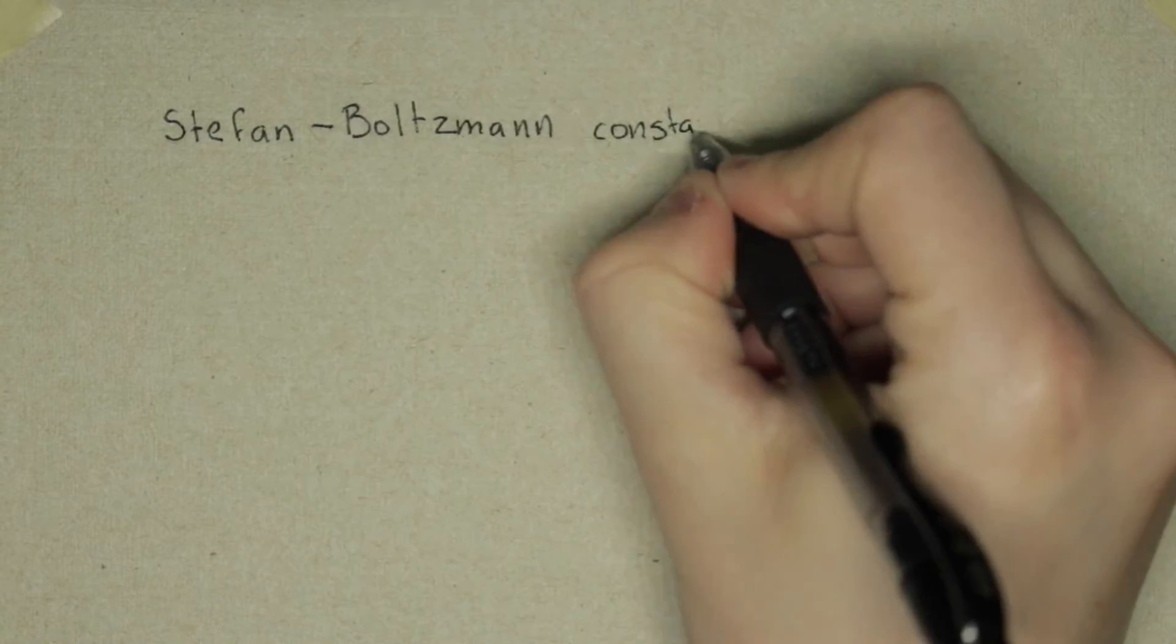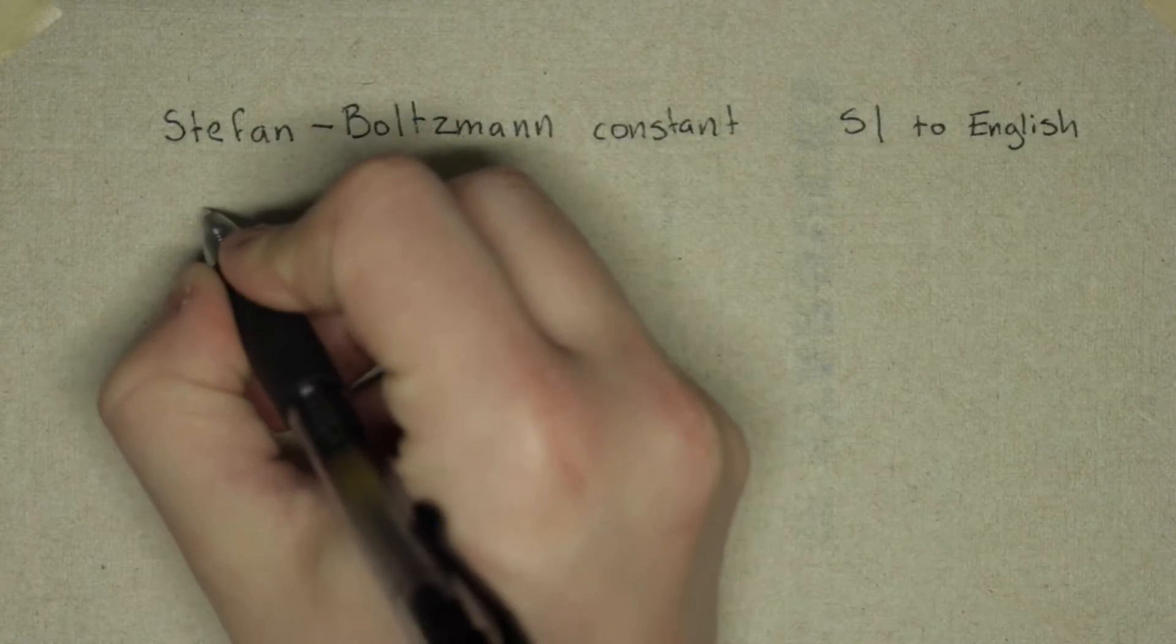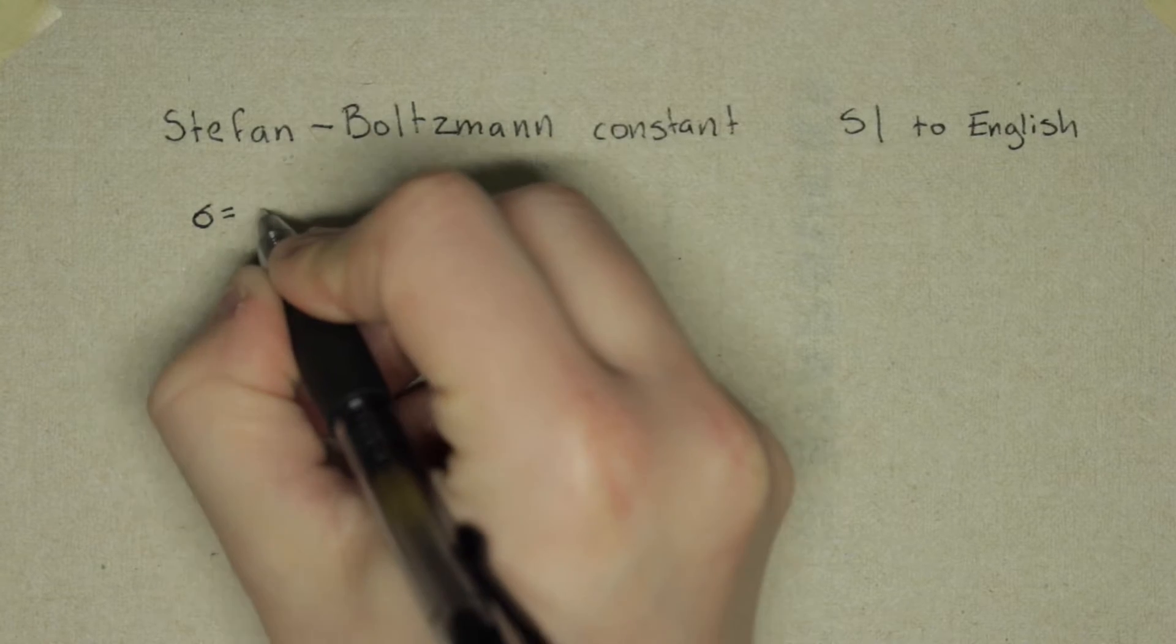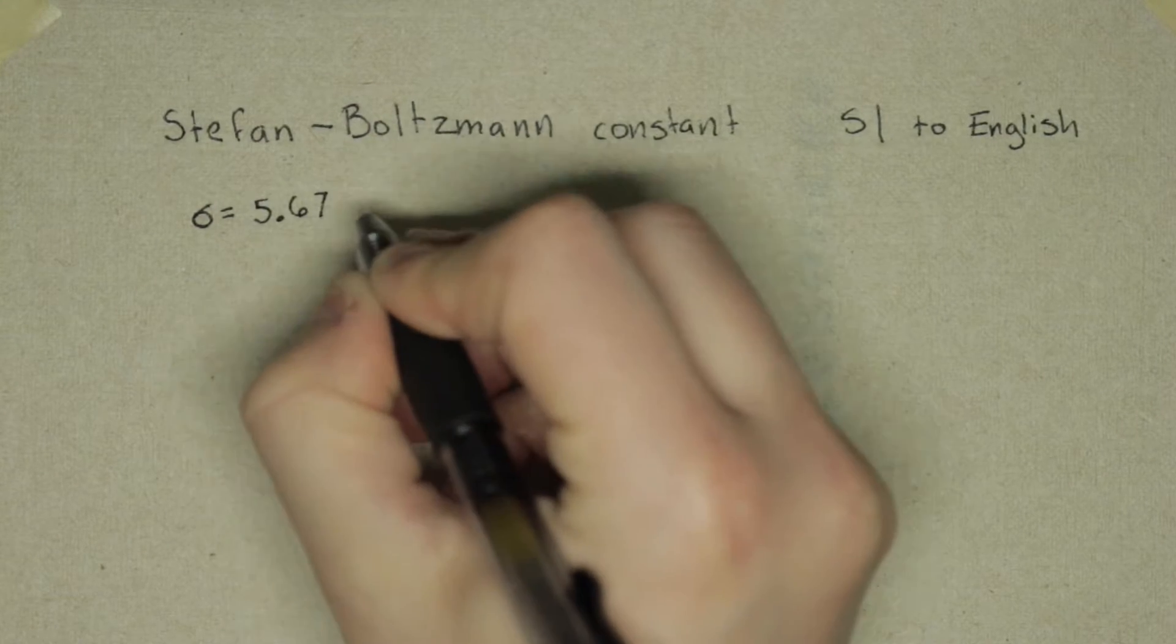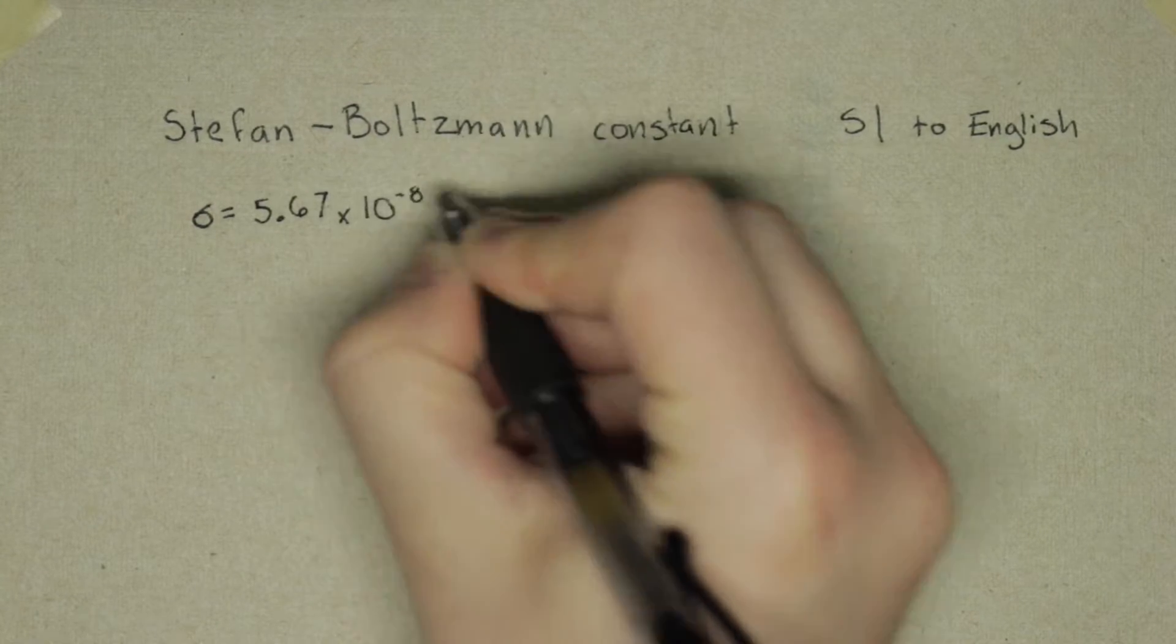The Stefan-Boltzmann constant, called Stefan's constant by his friends, is used in the Stefan-Boltzmann law to describe the power radiated from a black body.